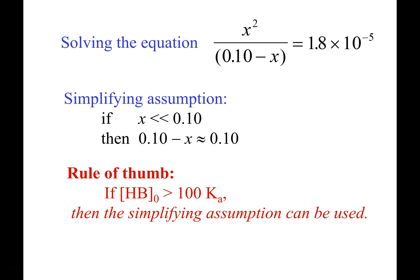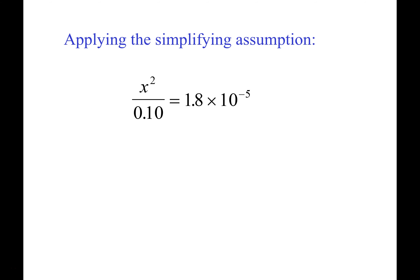Let's double check: 100 times our Ka gives 1.8×10⁻³. Is 0.10 greater than 1.8×10⁻³? Yes — so the simplifying assumption works. When you're working problems on a test and homework, don't forget to state your simplifying assumption once you get to that point. Now we cross-multiply: X equals the square root of 1.8×10⁻⁶.